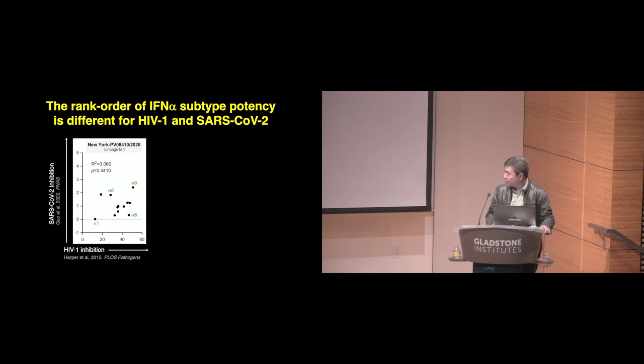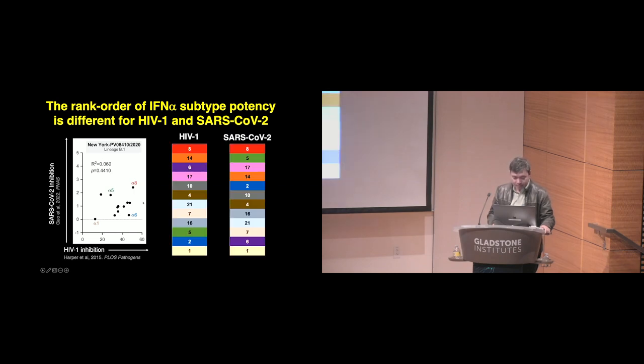Since we use the same interferons for the HIV work and the SARS-CoV-2 work—these were recombinant interferons from Sid Pestka's company, PBL Assay Science—we were surprised to see there's really no strong correlation. The same interferons that are the best and the worst were found, but within the middle we can't see a strong correlation. This is another way of showing that: interferon alpha-6 is one of the most potent interferons we found against HIV, but it's one of the weakest against SARS-CoV-2. By contrast, interferon alpha-5 is really potent against SARS-CoV-2 but is one of the weakest against HIV-1.